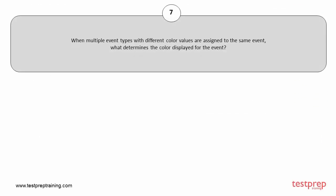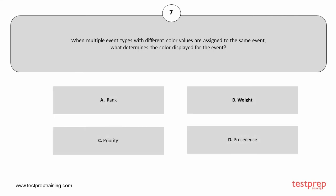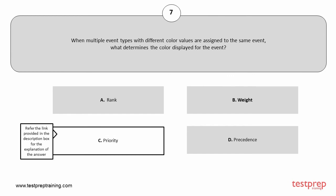Question number 7. When multiple event types with different color values are assigned to the same event, what determines the color displayed for the event? Your options are: A. Rank. B. Weight. C. Priority. D. Precedence. The correct answer is option C.